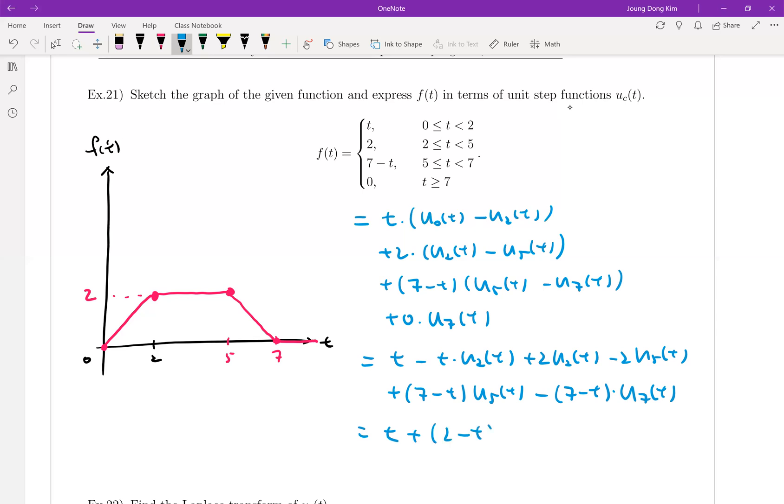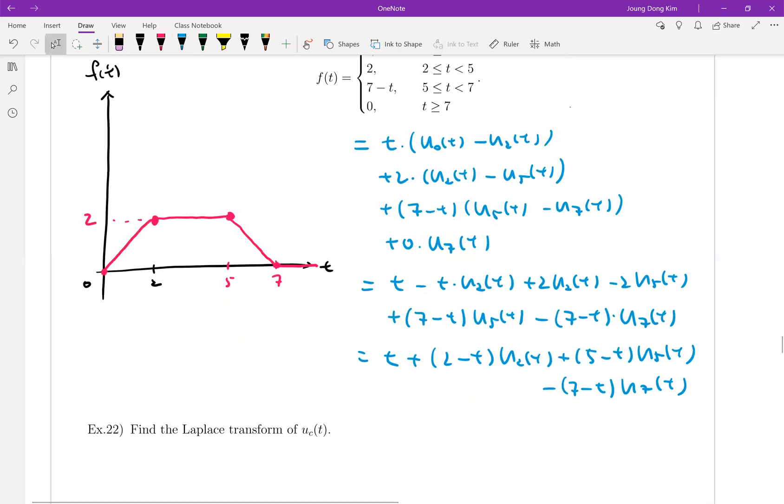And let me write like this way: 2 minus t, U_2(t), and minus 2 and this guy, right? It is 5 minus t, U_5(t), and minus 7 minus t, U_7(t). So we can add minus 1 plus t, H(t minus 2) plus something, U(t minus 2). That's it, okay?